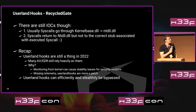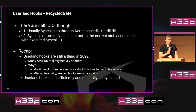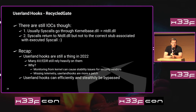Userland hooks are still a thing in 2022 — I was quite surprised because I thought they were a relic from the past, but that's not the case. Many antivirus and security products still rely heavily on them. The first reason is that monitoring from kernel only can cause stability issues — if you mess up your kernel driver, your client won't be protected but gets a blue screen. The second reason was missing telemetry; there was no other way for an antivirus to understand if and how a certain API call was used. From the attacker's perspective, userland hooks are not a problem — they can always be efficiently and stealthily bypassed, and GitHub is full of bypassing techniques.